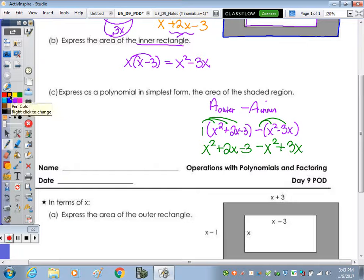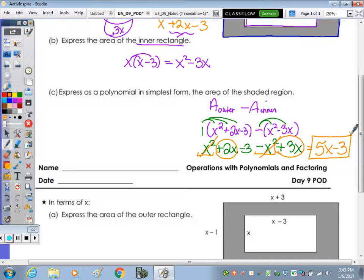Combining our like terms. And looking to combine in standard form, so highest to lowest, first we have an x squared and a negative x squared, so they're going to cancel out. A positive 2x and a positive 3x equals 5x. And there's nothing to combine with a negative 3, so I simply just copy it down. So that's in simplest form in terms of x, as x is in our answer, the area of the shaded region.